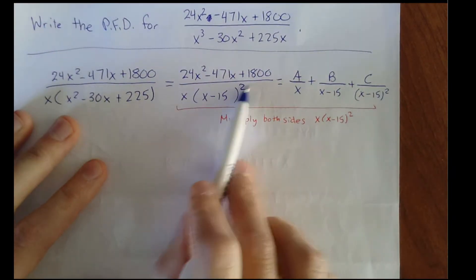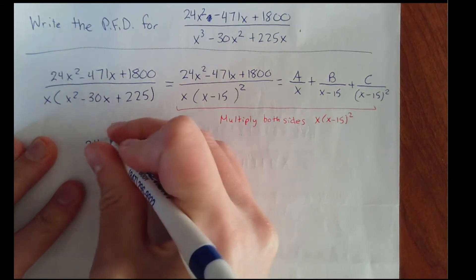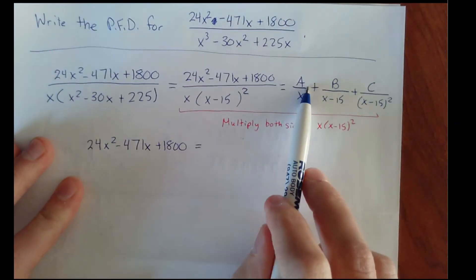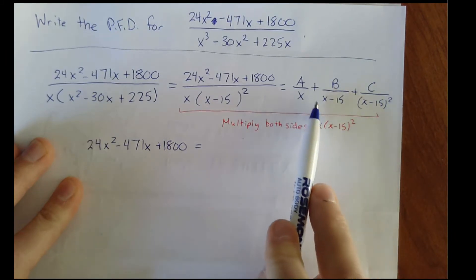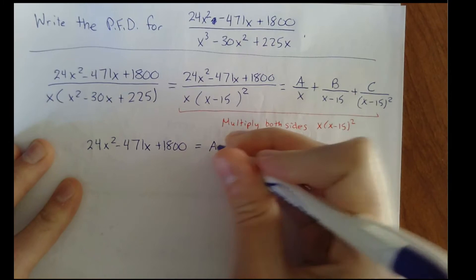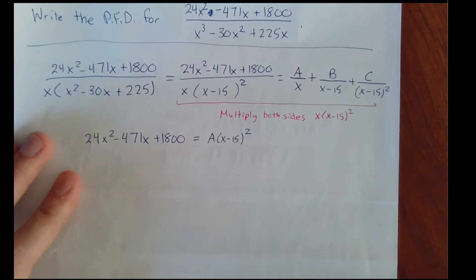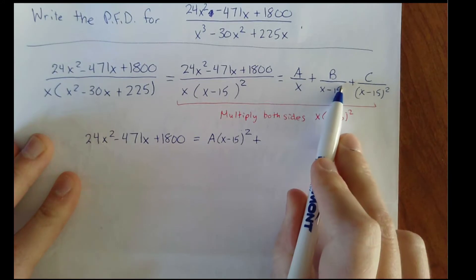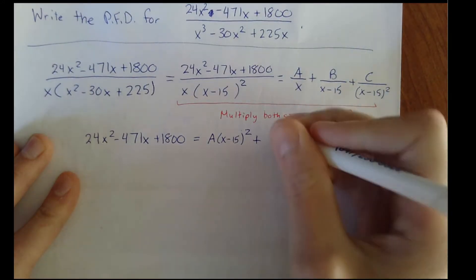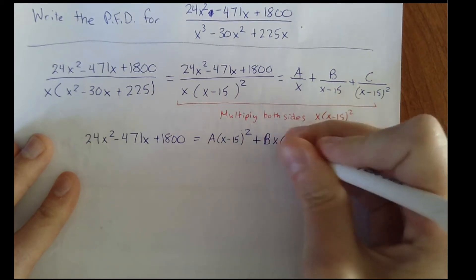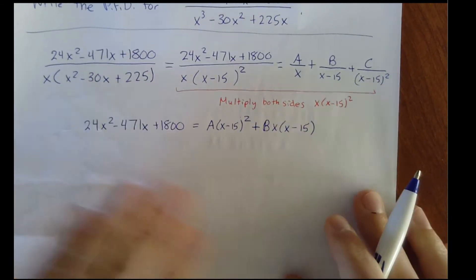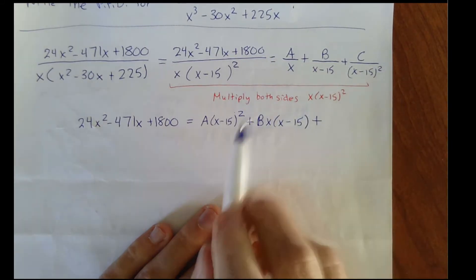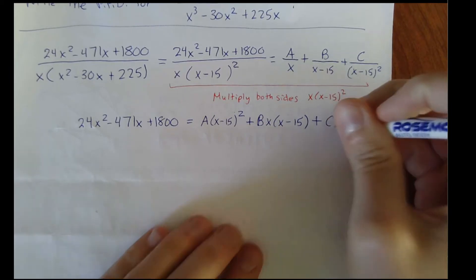After multiplying both sides by x times x minus 15 squared, the denominator on the left cancels entirely and we're just left with the numerator. On the right side, multiplying the first fraction clears the x, leaving A times x minus 15 squared. For the B term, one factor of x minus 15 cancels, leaving B times x times x minus 15. For the C term, the x minus 15 squared cancels, leaving C times x.